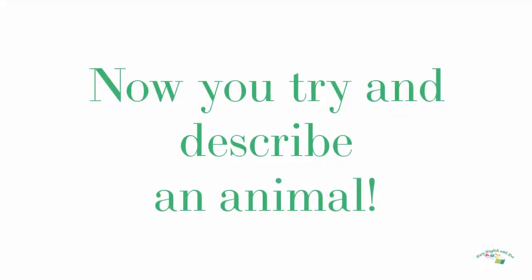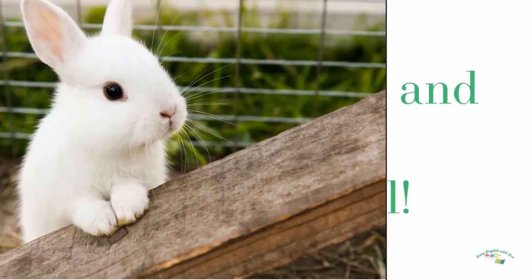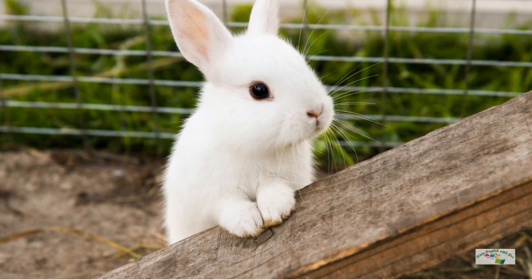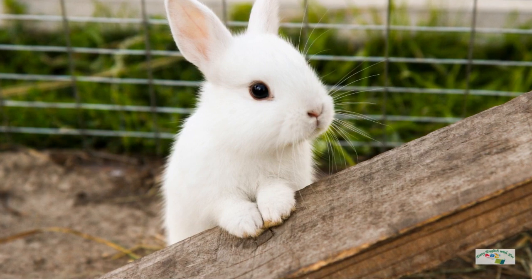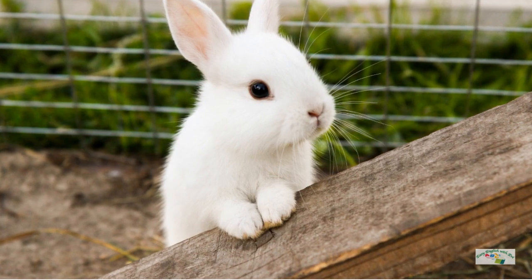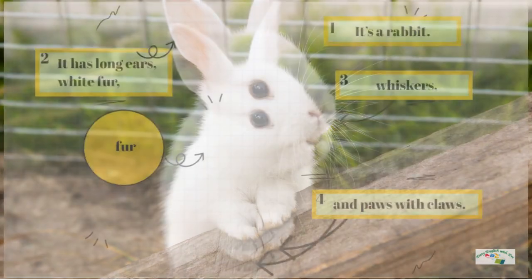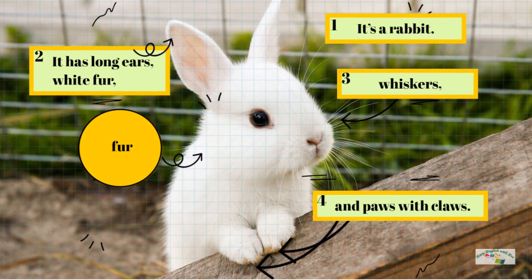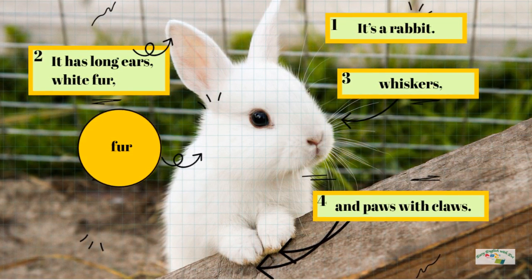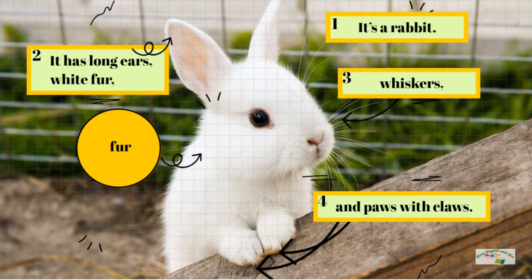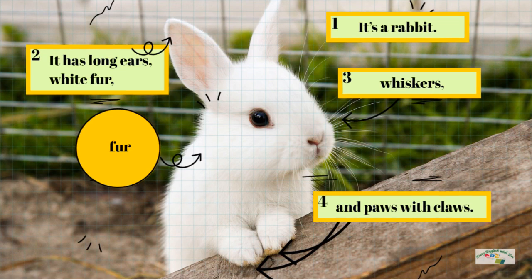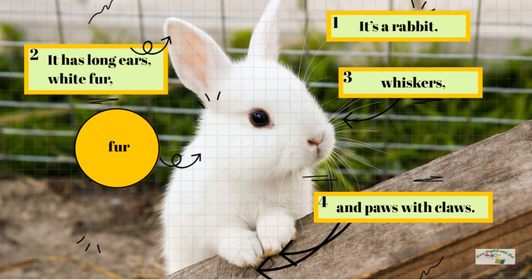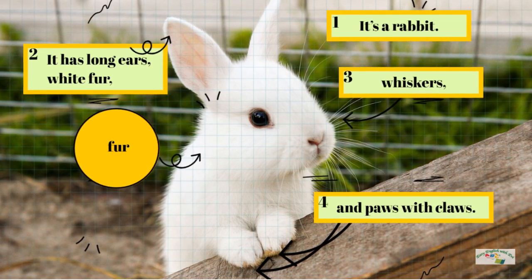Now you try and describe an animal. It's a rabbit. It has long ears, white fur, whiskers and paws with claws.